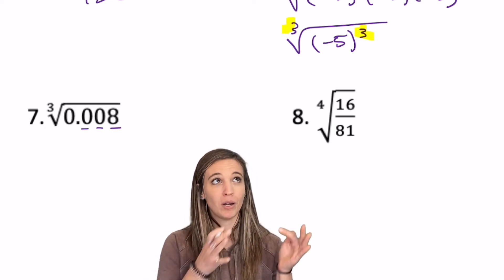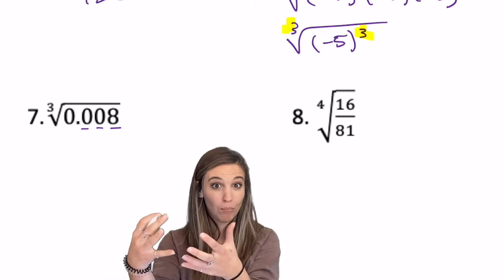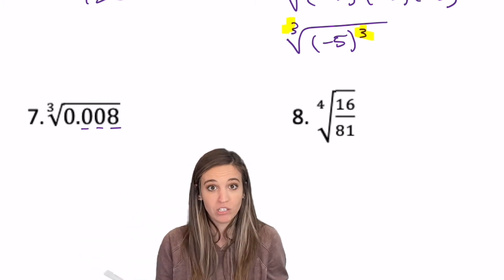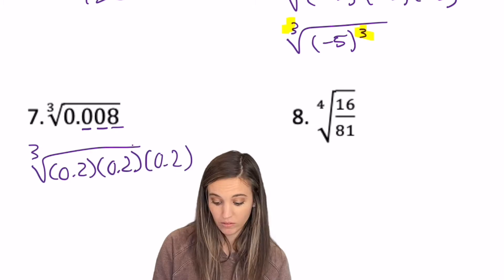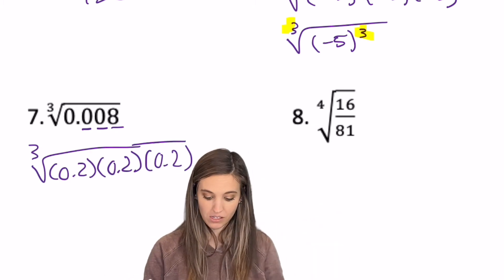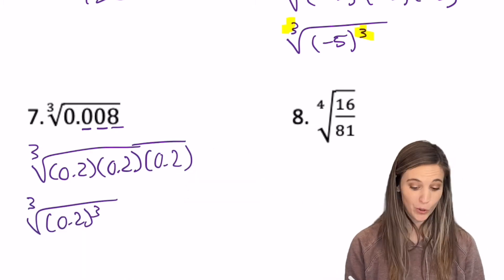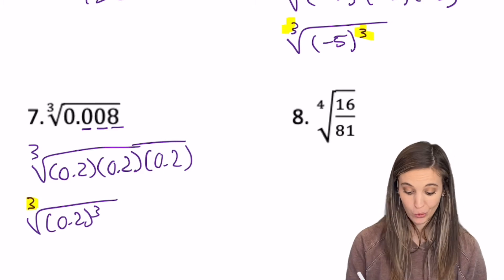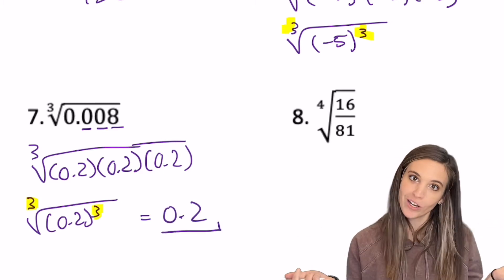and I'm going to multiply three numbers to get that 0.008, well, 0.2 times 0.2 times 0.2. That way I'm getting those three decimal places. So the cube root of 0.2 cubed is 0.2.